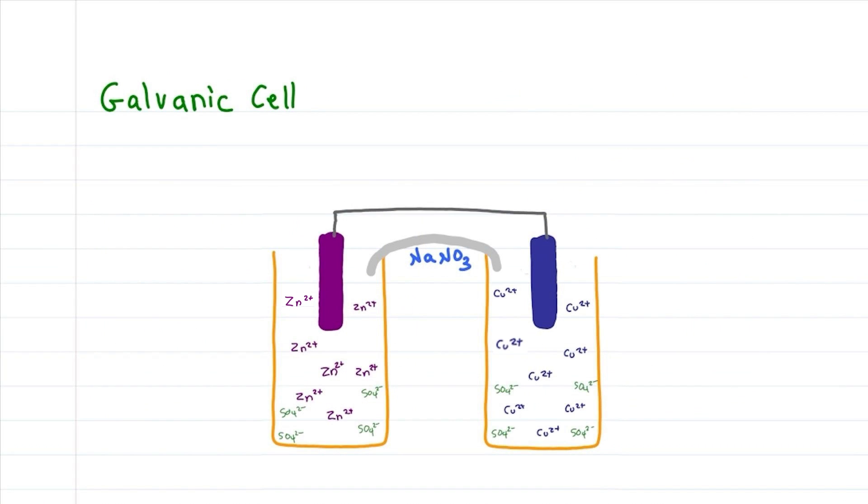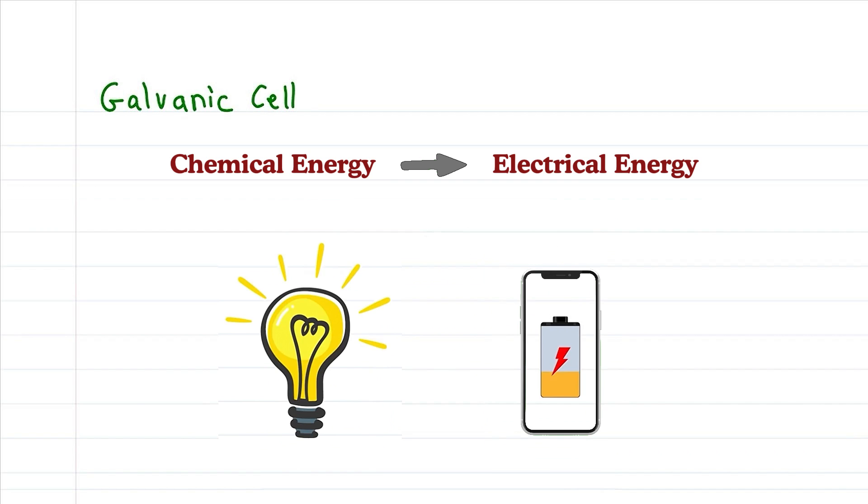The galvanic or voltaic cell is in essence a battery. The battery turns chemical energy from redox reactions into electrical energy to power a light bulb or your cell phone.